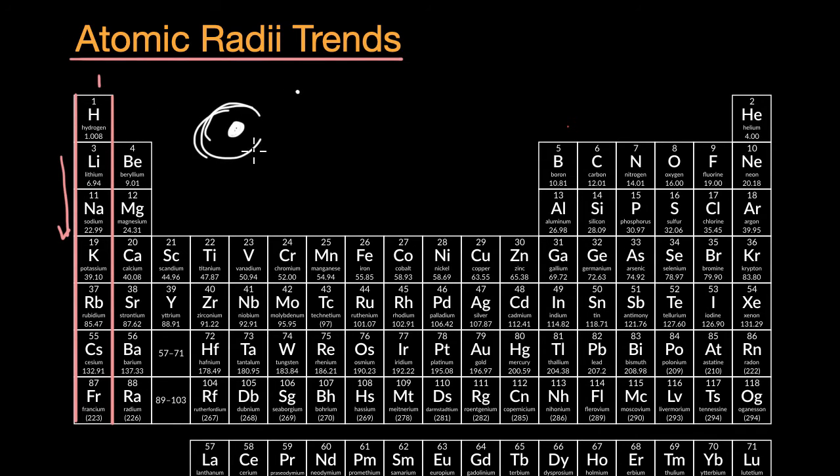In between that nucleus and that valence electron, and that valence electron is going to be further and further out because it's at a higher energy level.